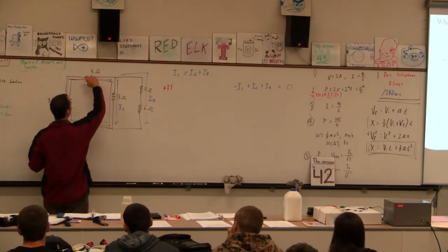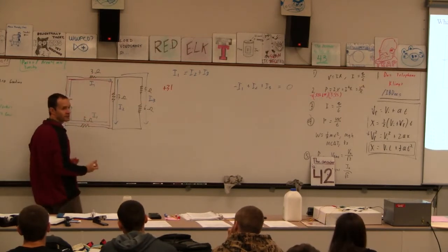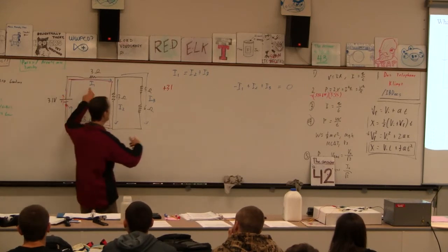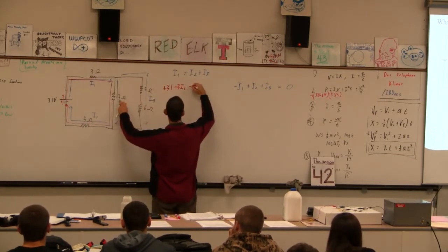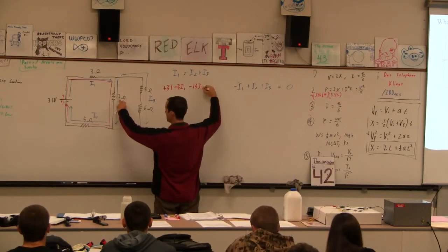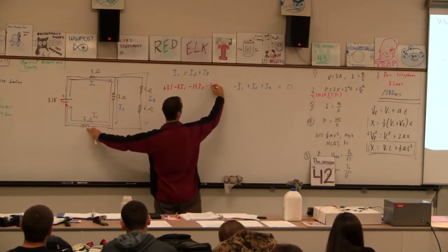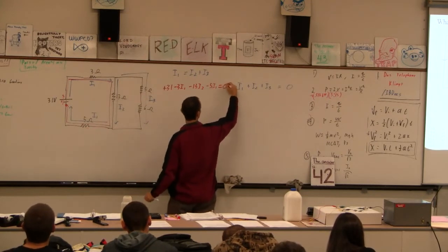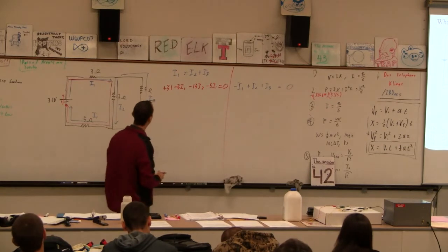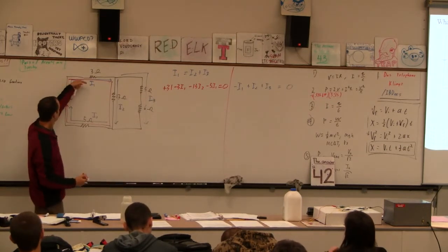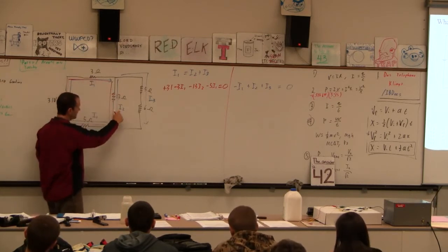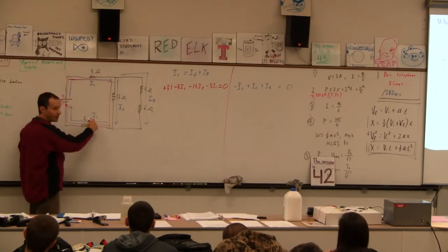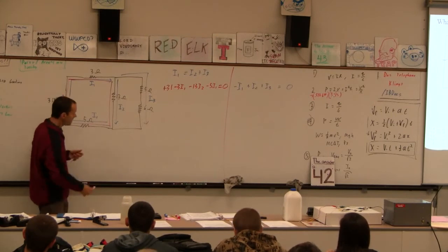We go down 31. And then every time you go downstream through a resistor, the voltage drops. It's like a waterfall. Right? So it's minus 3I1. Minus 13I2. Minus 5I1. And that equals 0. So let's do that again. I go up 31. Down 3I1. And then I'm on a different current. I'm on I2. So it's down 13I2. And then I go down 5I1. And I'm back where I started. That has to equal 0.